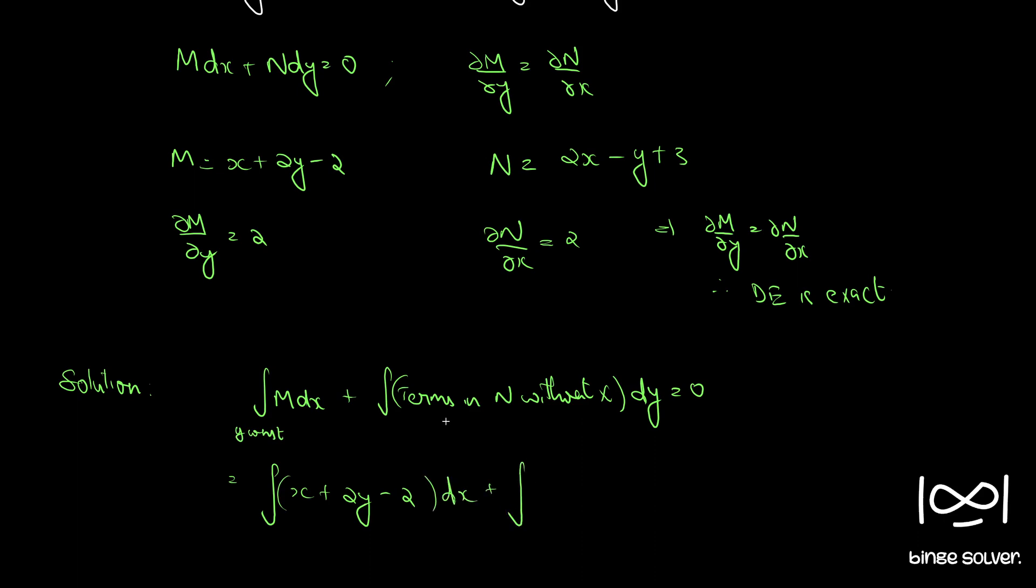plus integral terms in n without x. So minus y plus 3 equal to c.